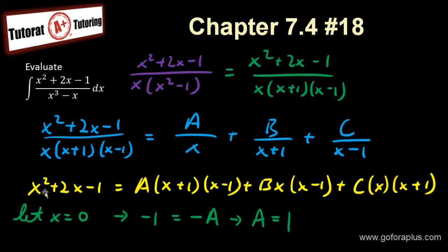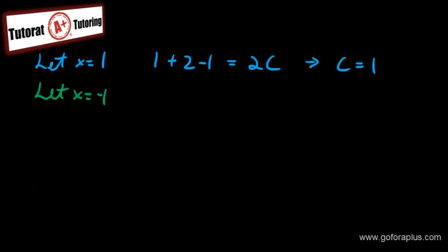In this case, I get 1 plus minus 2 minus 1. So I have 1 plus minus 2 minus 1 equals 2B. And then what is B? B is going to be minus 1.